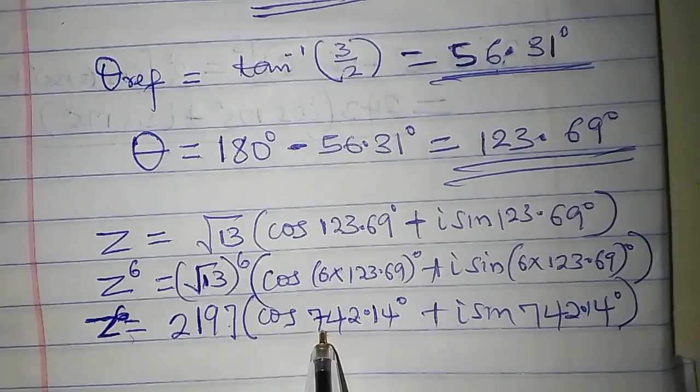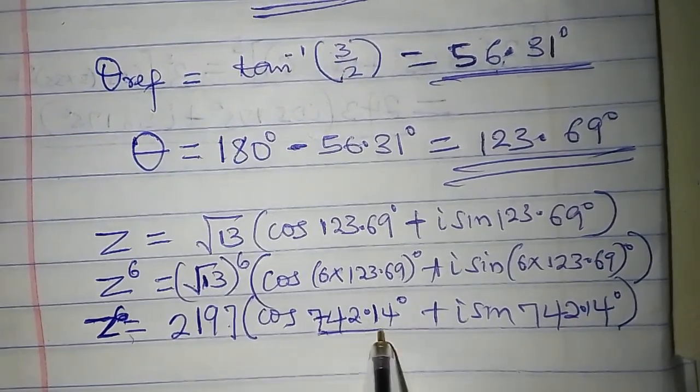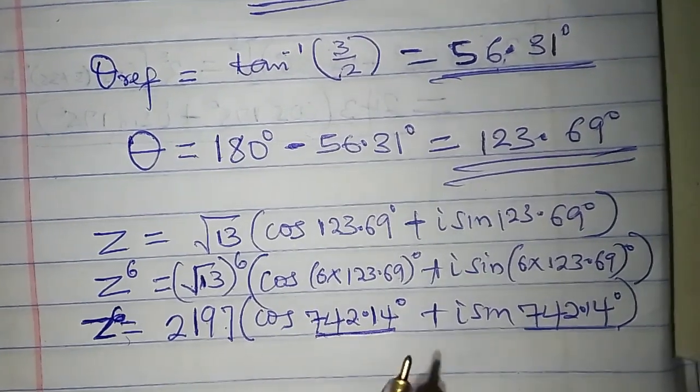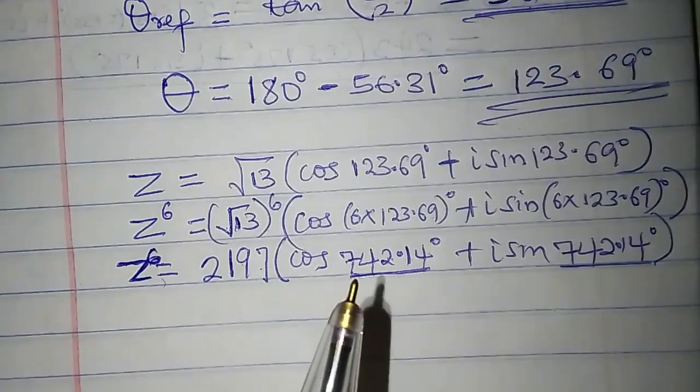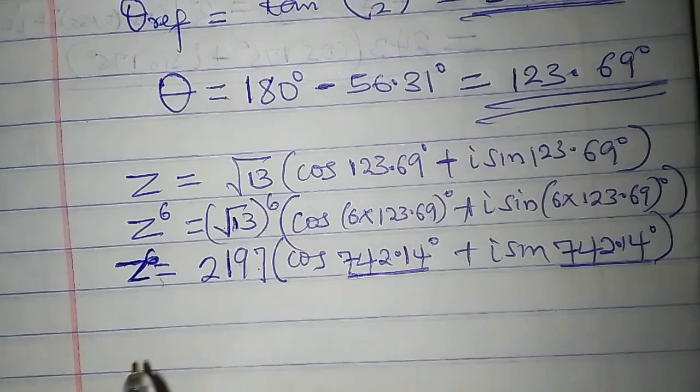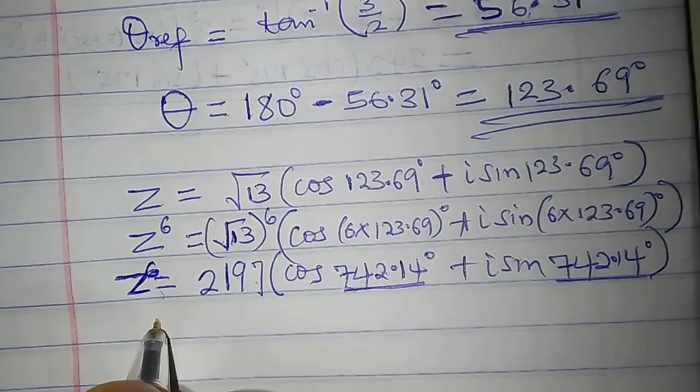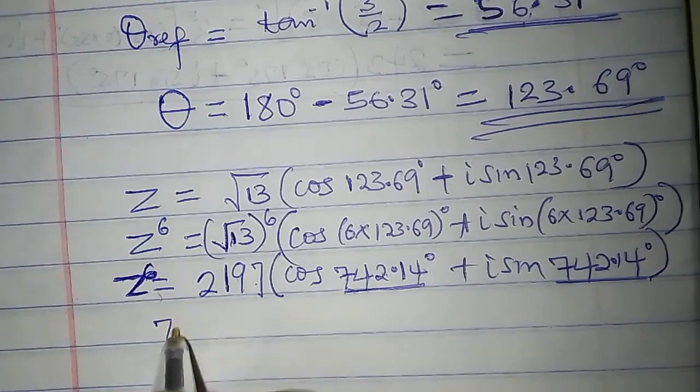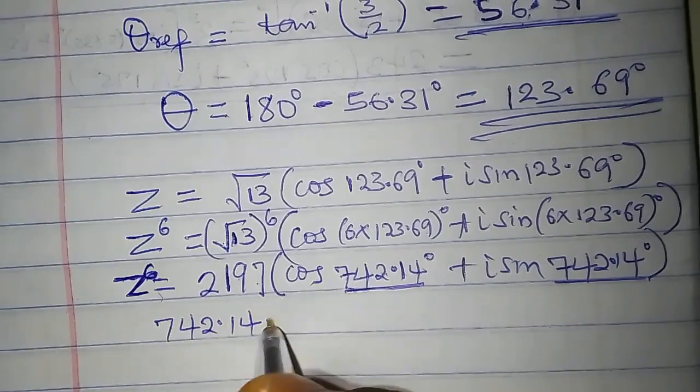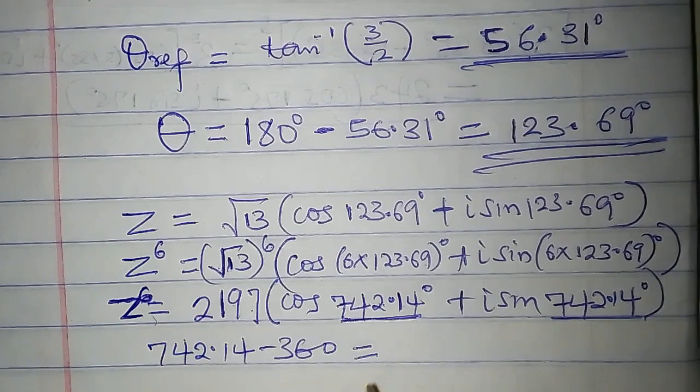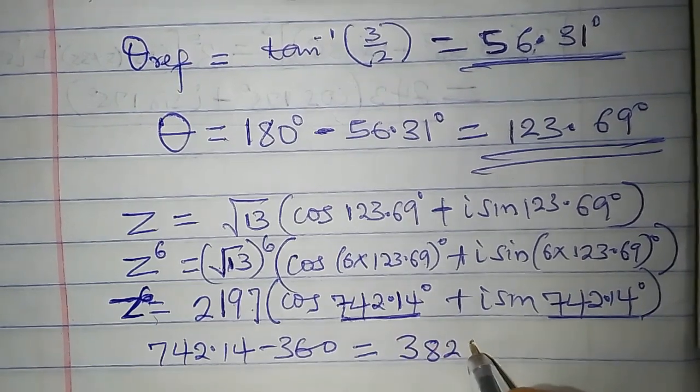But this angle here, 742.14, is greater than 360 degrees. So let us look for the smallest positive angle by subtracting 360 from it. 742.14 minus 360 equals 382.14.